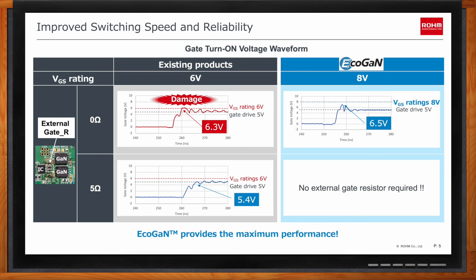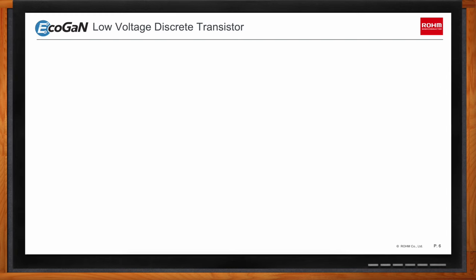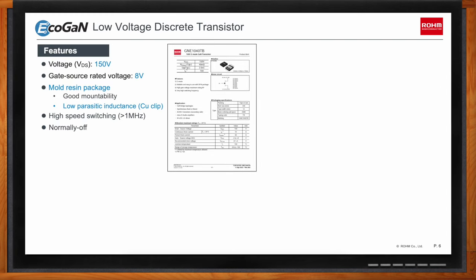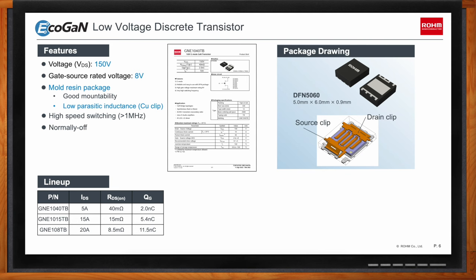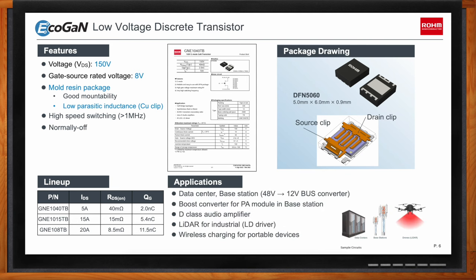The EcoGaN transistors are packaged in a molded resin package that includes a copper clip electrical connection for lower parasitic inductance. You can select between 5, 10, and 20 amp current options, with drain-source resistance from 40 down to 8.5 milli-ohms. These characteristics make them ideal for data centers, base stations, industrial riders, and more.